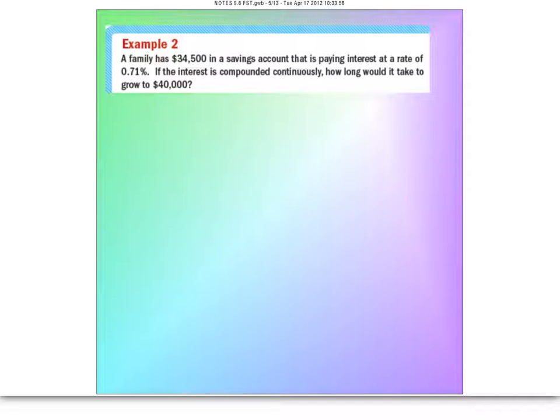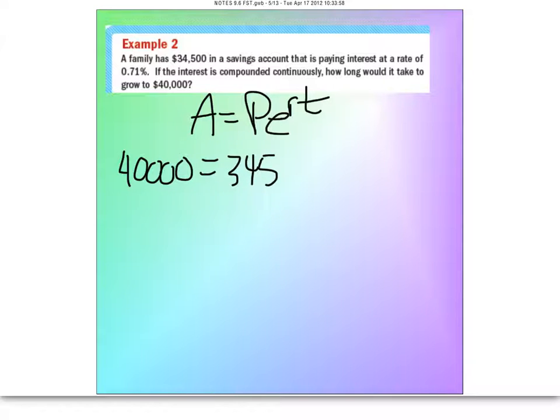The question is, how long would it take to grow to $40,000? So when I see compounded continuously, I'm just going to put the APERT. And we have enough information to fill everything in. The ending amount here is $40,000, so I'll put that here. Our starting amount is $34,500. E is just Euler's number.